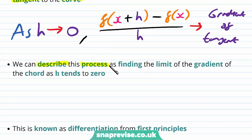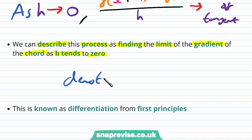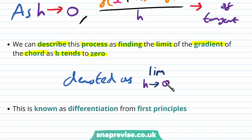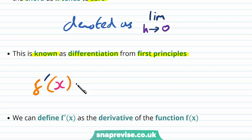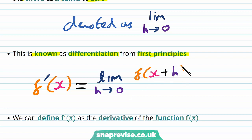We can describe this process as finding the limit of the gradient of the chord as h tends to 0. We denote this by writing 'lim' with h tending to 0. This process is known as differentiation from first principles. So we have that our gradient function f'(x) can be found by taking the limit as h approaches 0 of [f(x+h) - f(x)] / h.